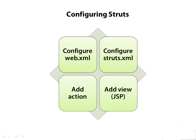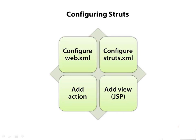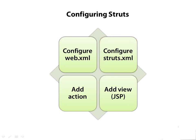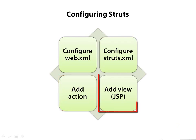We're going to create our new project and do four things to get started. We're going to configure the web.xml file, setting it to use Struts to handle the requests coming into our web server. Then we're going to configure our struts.xml file, telling it where it can find the actions and what to map different actions to — what view or result they should be mapped to. Then we're going to add a basic hello world action.